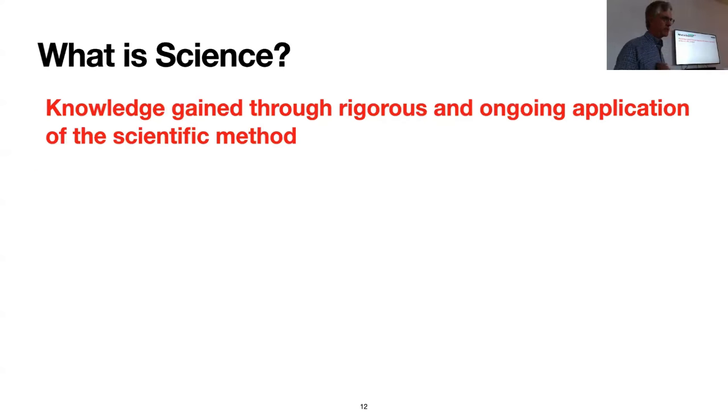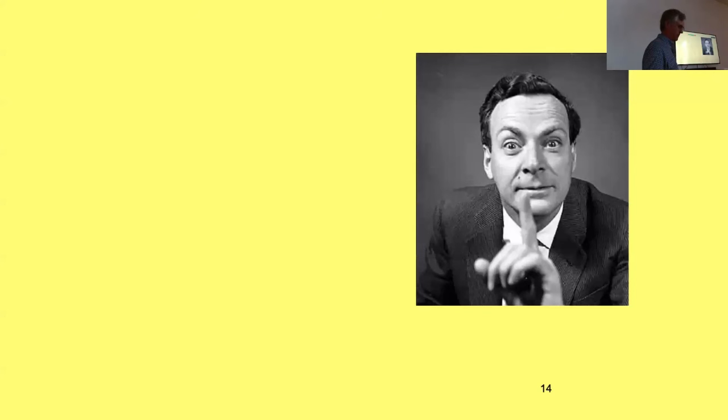We begin with a few definitions. We're still in the introductory phase here, but what is science? I think that's a question we have to ask. As we go forward, let's remember the words of Einstein, who said, one thing I have learned in a long life is that all of our science measured against reality is primitive and childlike, and yet it is the most precious thing we have. So I would say that science is knowledge gained through the rigorous and ongoing application of the scientific method. Well, that's easy, but what is the scientific method?